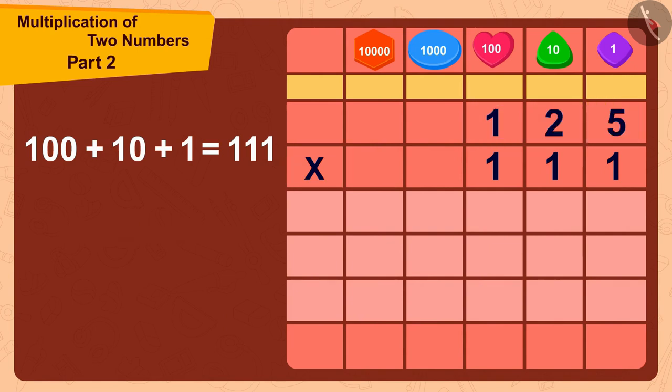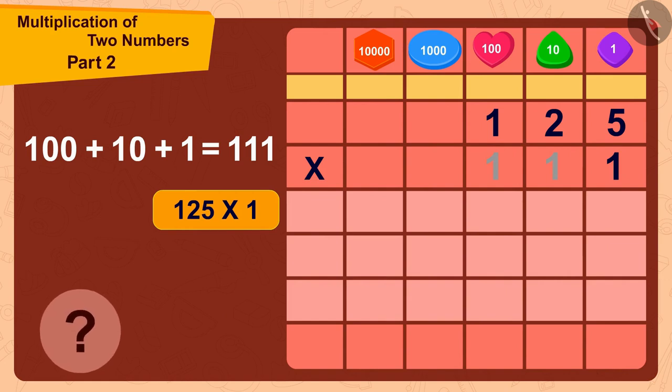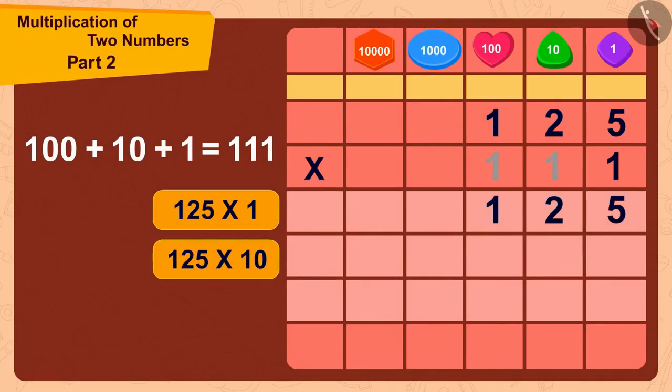First we will multiply 125 with 1. How much is 125 times 1? Exactly, 125.